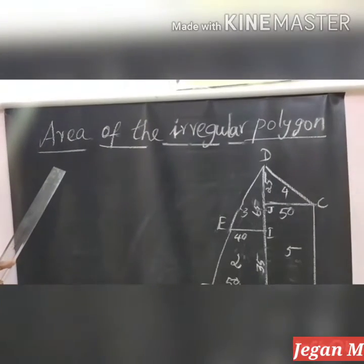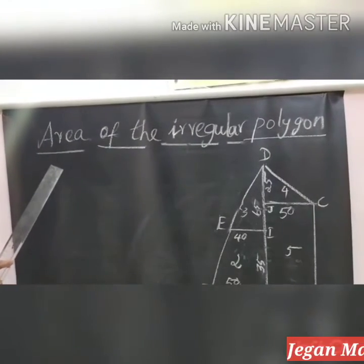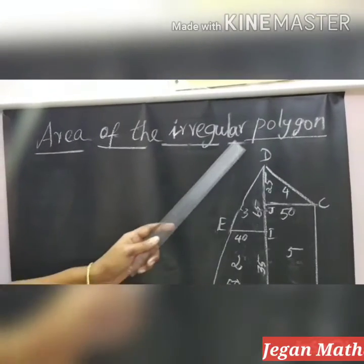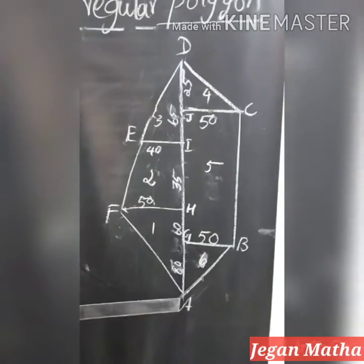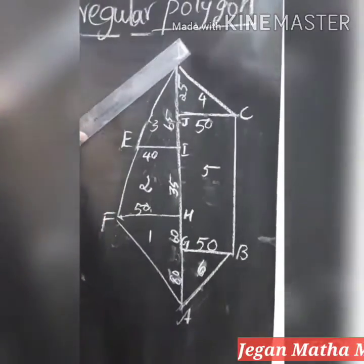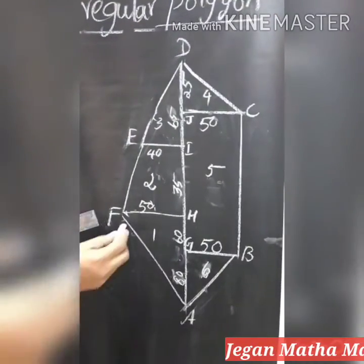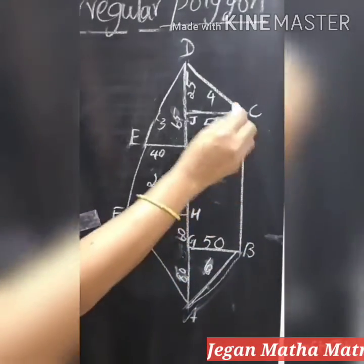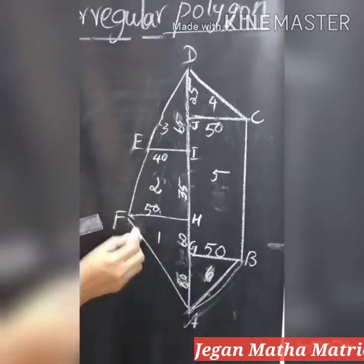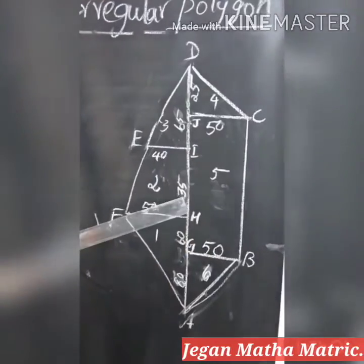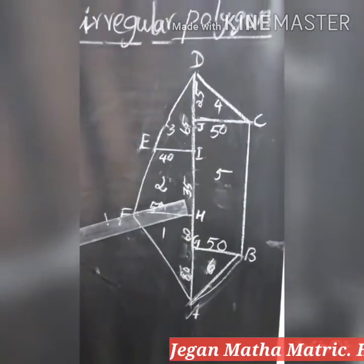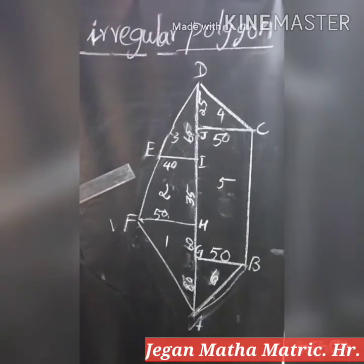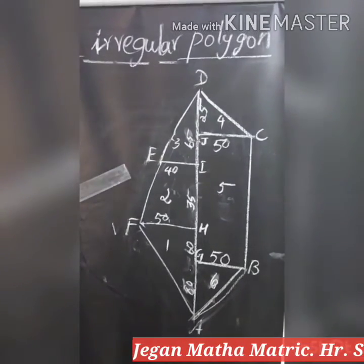Good morning students. Today we are going to learn about how to find the area of the irregular polygon. See this picture - A, B, C, D, E, F. This is the irregular polygon - it is the outside of this picture. You have to find the area of this irregular polygon. We don't have the formula for irregular polygon.